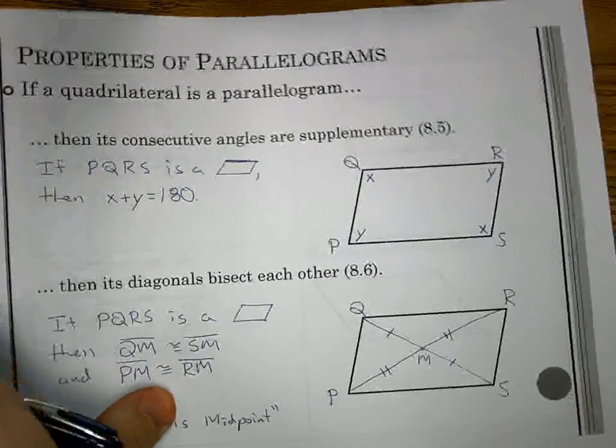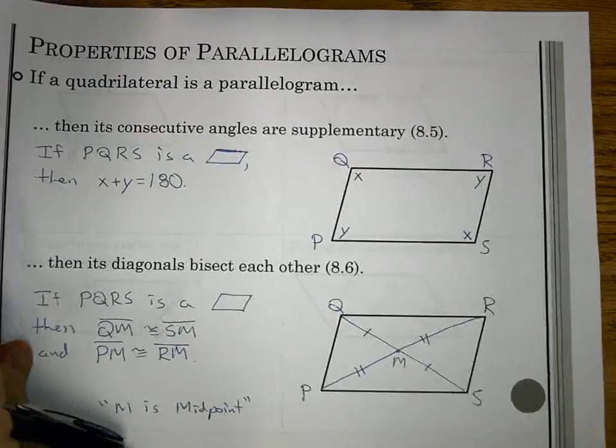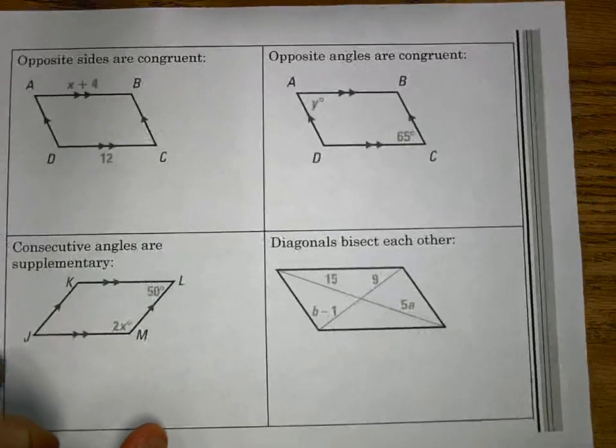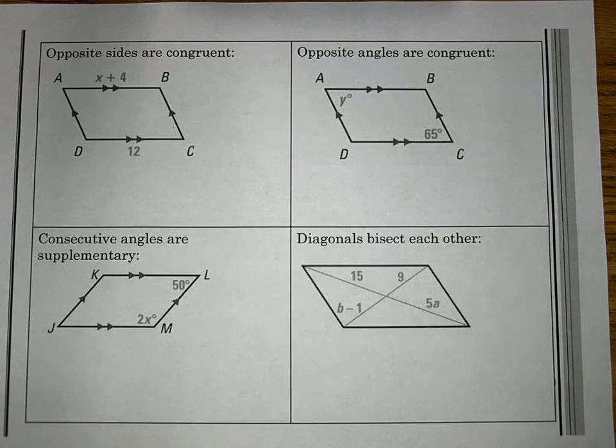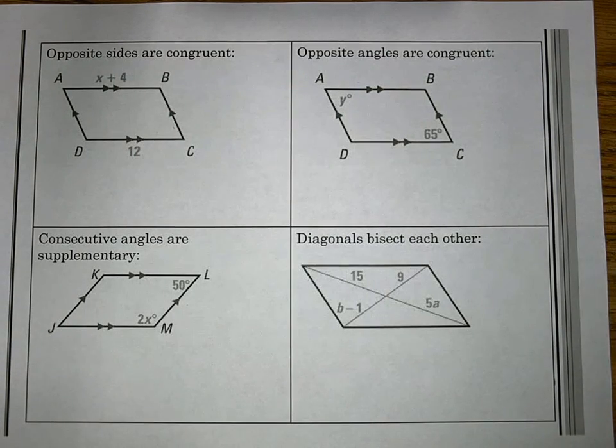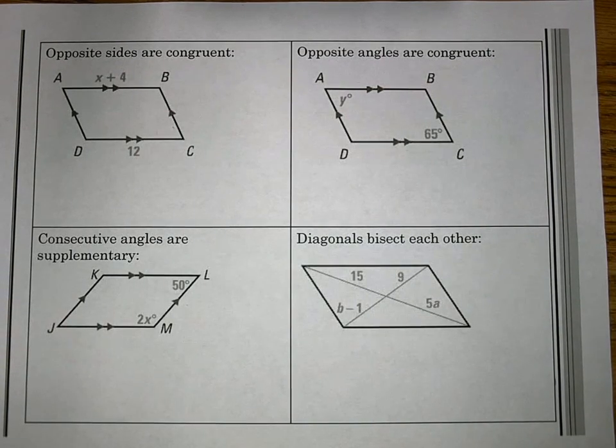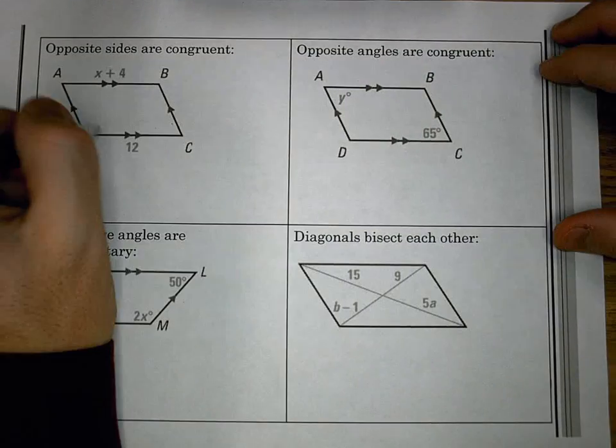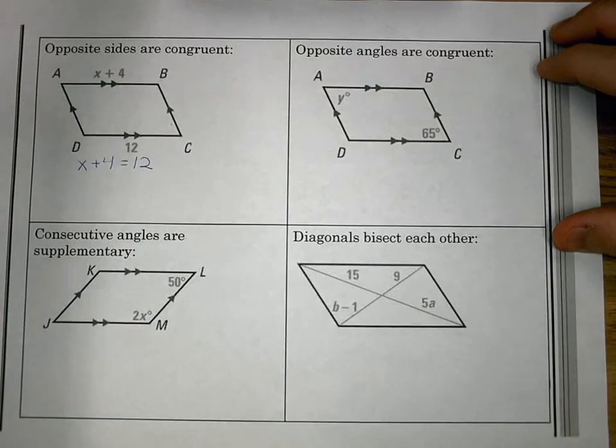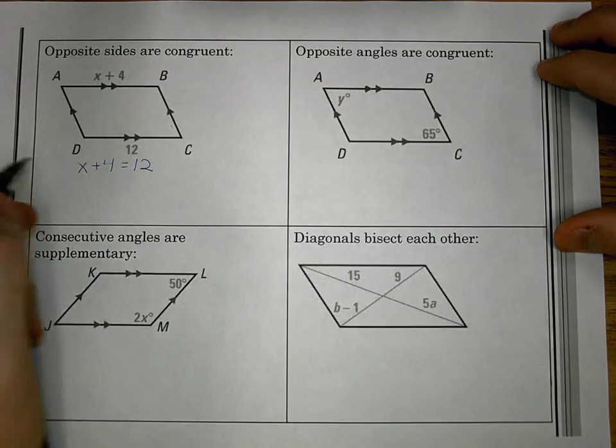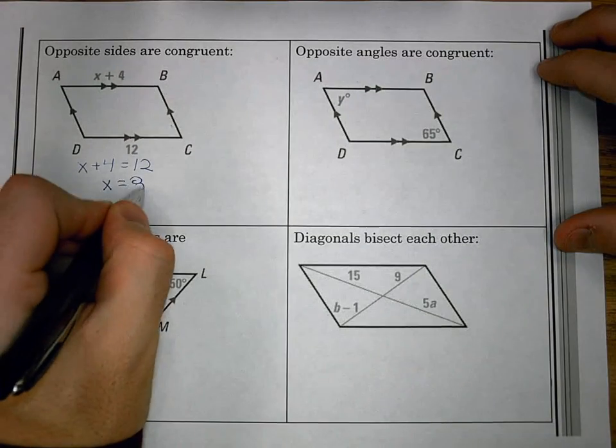Now, the other four, we can narrow in to what type of problem it's really going to be. For example, if opposite sides are congruent, maybe it's one like we have in the top left here, where I know that AB is X plus 4 and DC is 12. If that's the case, X plus 4 equals 12 because those sides are opposite and they're equal. So X equals 8.